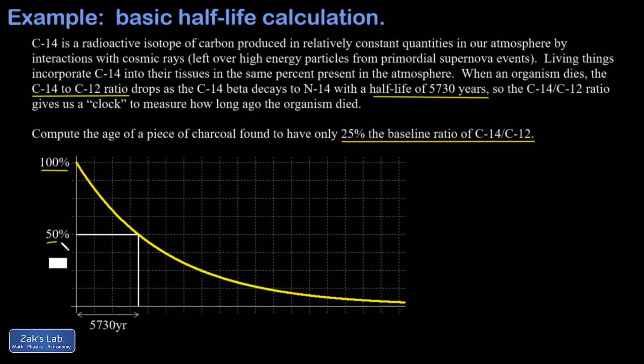After 5,730 years, one half-life of C-14, only half of that original C-14 is going to be left and the C-14 to C-12 ratio will be cut in half. So what does it take to end up with only 25% of the baseline ratio of C-14 to C-12?